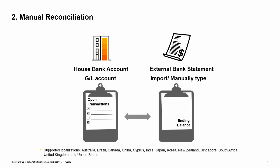The second option is Manual Reconciliation. It is supported in Australia, Brazil, Canada, China, Cyprus, India, Japan, Korea, New Zealand, Singapore, South Africa, United Kingdom, and United States. With this option, you enter the ending date and balance from the statement received from the bank. The system displays open transactions for the bank GL account, and you manually match them against the balance received from the bank. This function enables you to verify and reconcile the transactions recorded in SAP Business One against the balance received from the bank and to create adjustments if required.